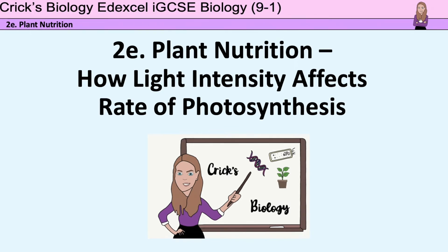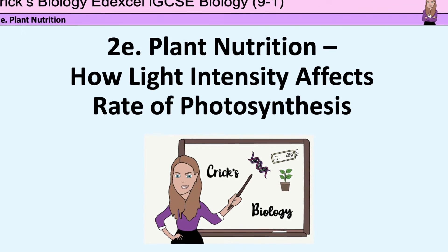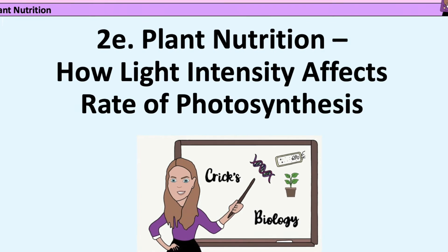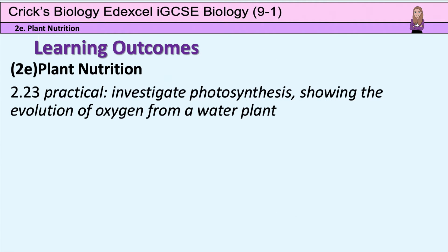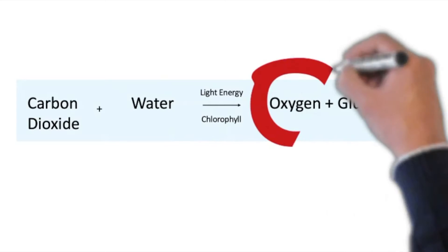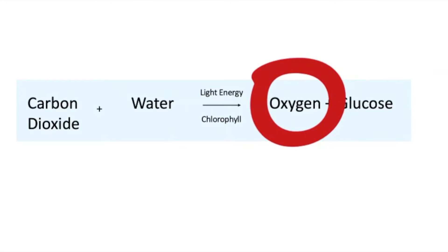This lesson is about the practical to investigate how light intensity affects the rate of photosynthesis in green plants. The learning outcome is to investigate how the rate of photosynthesis can be measured by measuring the release of the waste gas of photosynthesis from a water plant. Oxygen is one of the byproducts of photosynthesis, so if we measure the rate of oxygen release from a plant, we should be able to measure the rate of photosynthesis.